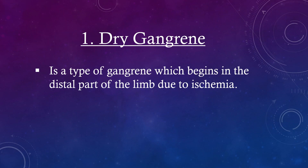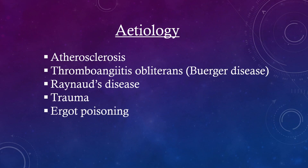Dry gangrene is a type of gangrene which begins in the distal part of the limb due to ischemia. Etiology includes atherosclerosis, thromboangiitis obliterans (i.e. Buerger's disease), Raynaud's disease, trauma, and ergot poisoning.